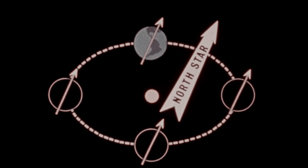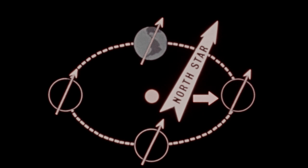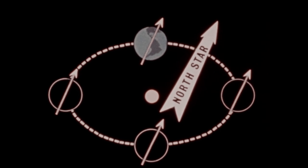Now, notice that in one of these four positions, the northern end of the axis is tipped toward the sun. In another position, the northern end of the axis is tipped away from the sun, and the southern end of the axis is tipped toward the sun. In the other two positions, neither end of the tilted axis is tipped toward the sun.